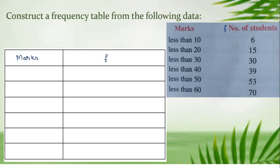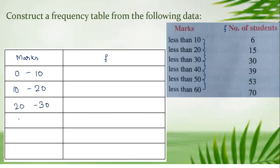To write the class interval, we need the length of the class. Just find the difference between these numbers: 20 minus 10 is 10; 30 minus 20 is 10; 40 minus 30 is 10. The difference between all of them is a constant 10. So the class interval length is 10. We write class intervals as 0 to 10, 10 to 20, 20 to 30, 30 to 40, 40 to 50, and 50 to 60.